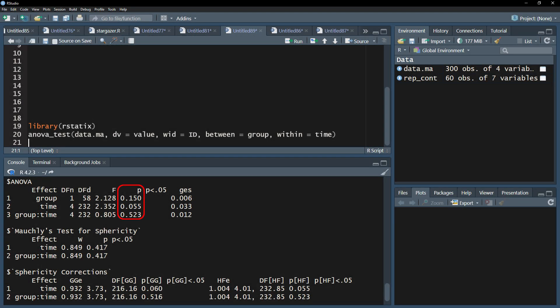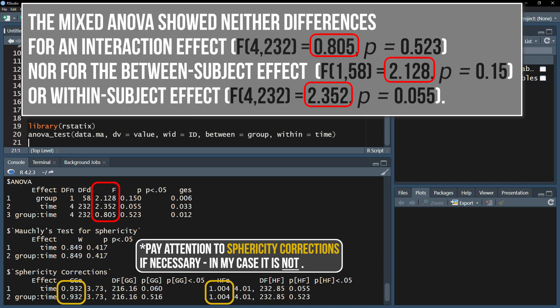In case none of your effects is significant, you will simply report that. Provide the test statistic alongside the degrees of freedom as well as the p-value.